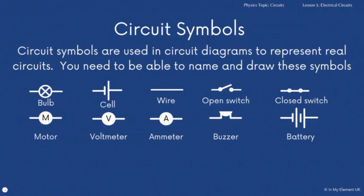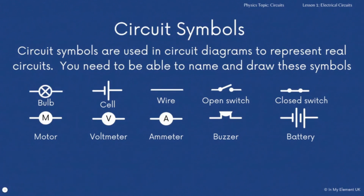Once you've done this, make sure that you do the worksheet. Obviously if you get stuck, you can rewatch the video and pause it as you go to help you. You really need to make sure you know the definitions for current, potential difference, and resistance, and also that you can explain how current moves around a circuit and draw circuit diagrams using the symbols we've covered here.